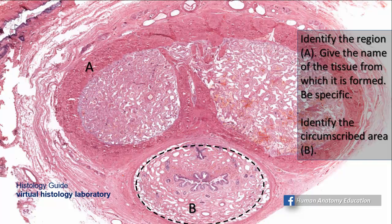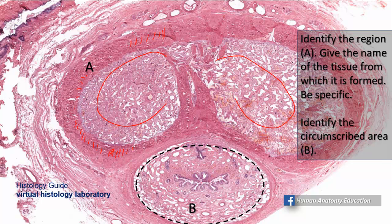Identify region A and give the name of the tissue from which it is formed. This is a cross-section of the penis showing the two corpora cavernosa covered by very thick dense connective tissue called tunica albuginea. The circumscribed area B is the corpus spongiosum, located on the ventral surface of the penis, and as you can see, it contains the urethra.